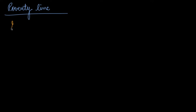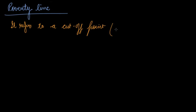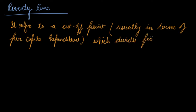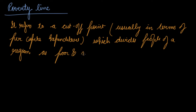In this video we will study the concept of poverty line. What is the poverty line? It refers to a cutoff point, usually in terms of per capita expenditure, which divides people of a region as poor and non-poor.